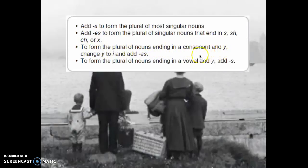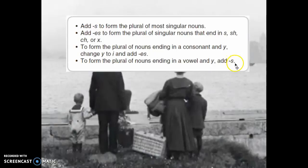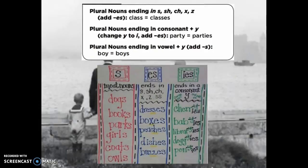Here's another spelling change: to form the plural of nouns that end in a consonant and a Y, you have to change the Y to I and add ES. You've been learning this rule since first grade. To form the plural of nouns ending in a vowel and a Y, you just add S. So if it has a consonant and a Y, change the Y to I and add ES; if it's a vowel and a Y, just add S.